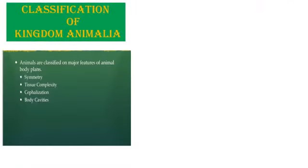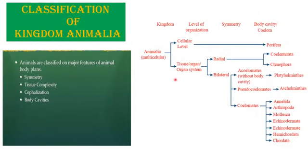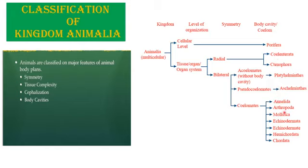Kingdom Animalia is classified on the basis of major features: body plan — whether it is at cellular level, tissue level, or organ system level; based on symmetry and tissue complexity — symmetry can be radial or bilateral; and based on the coelom found in animals — it can be acoelomate, pseudocoelomate, or coelomate. All animals are multicellular organisms.